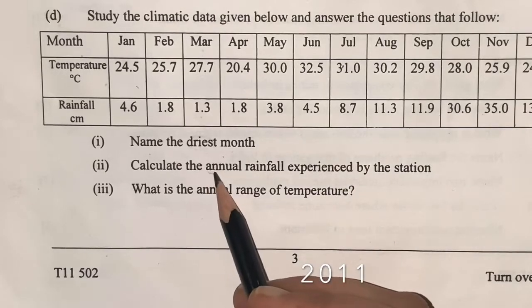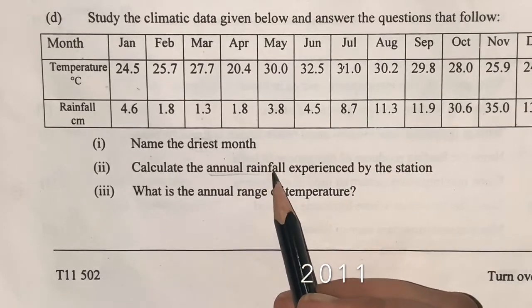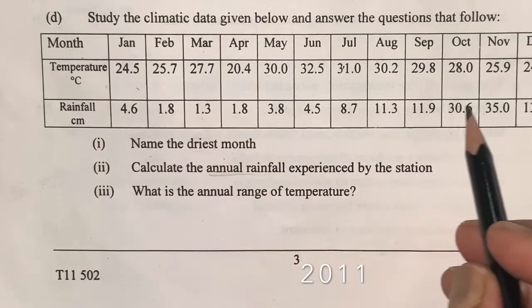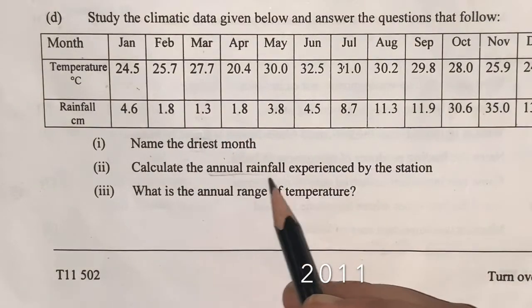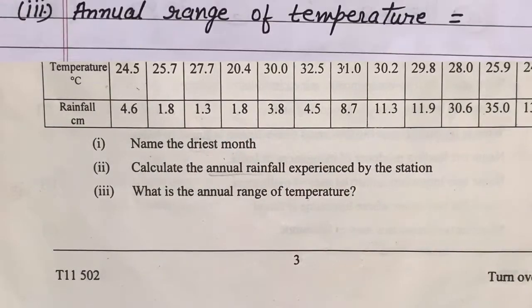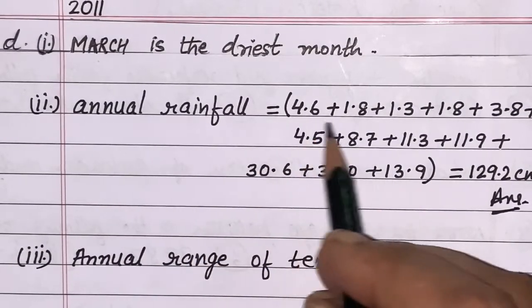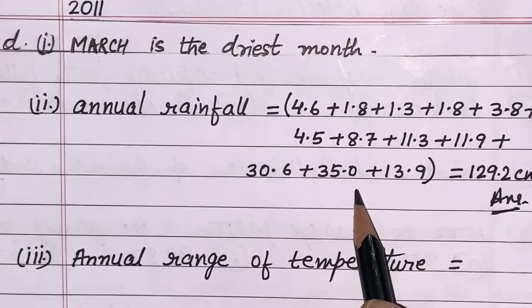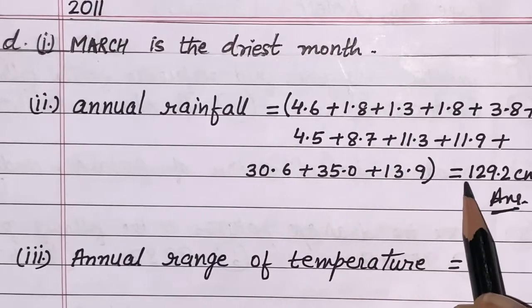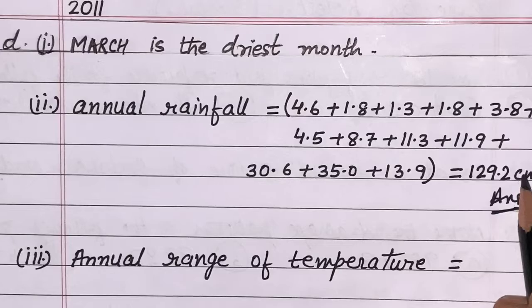Annual rainfall term means rainfall during the whole year. For the calculation of annual rainfall, I kept under the bracket all the values of rainfall and then added and got the answer 129.2 centimeter.